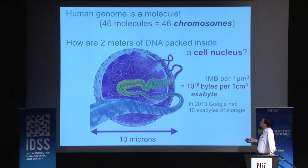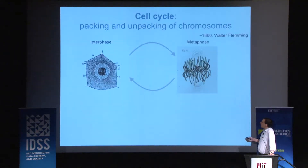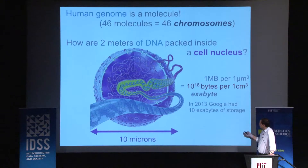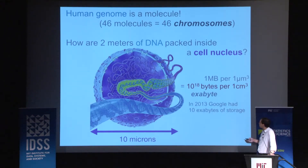In reality, the human genome is a molecule — actually 46 molecules called chromosomes. The total length of these 46 molecules is two meters, and two meters are contained within every single cell that has a nucleus. The question is: how are two meters packed inside 10 microns? That's the biological question.